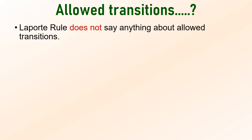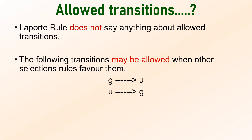What about allowed transitions? It is important to remember that the Laporte rule only addresses forbidden transitions and does not specifically define which transitions are allowed. Transitions between a symmetric orbital and an asymmetric orbital may be allowed if other selection rules permit them. For example, an electronic transition between an ungerade P orbital and a gerade D orbital could be allowed if it complies with other selection criteria. So the Laporte rule focuses on forbidden transitions and does not explicitly determine which transitions are allowed.